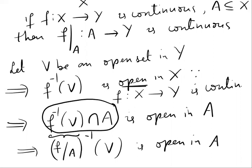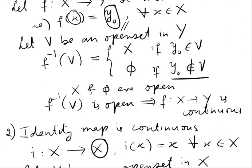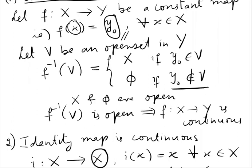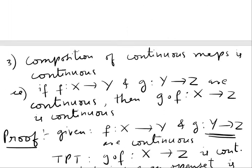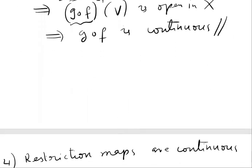Therefore, f restricted to A is continuous. Hence, restriction maps are continuous. So we have completed all four properties of continuity. The first one is constant maps are continuous. The second one is the identity map is continuous. The third one is composition of continuous maps is continuous. The fourth one is restriction maps are continuous.